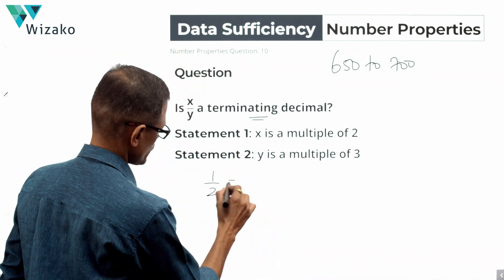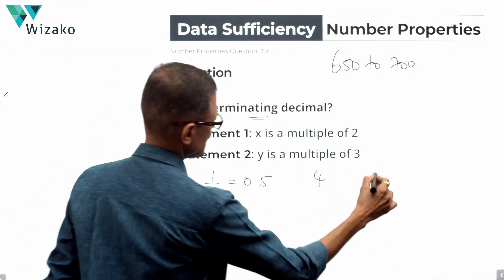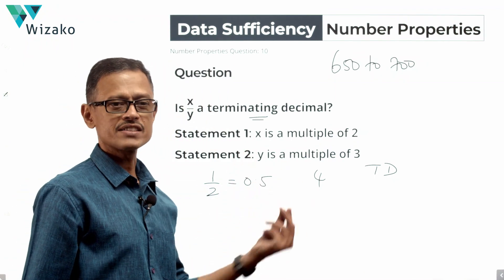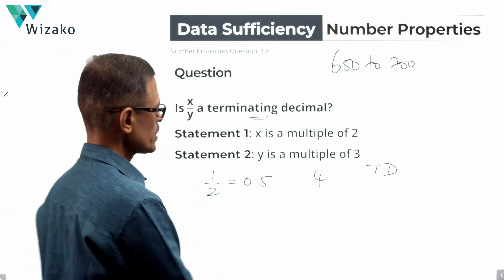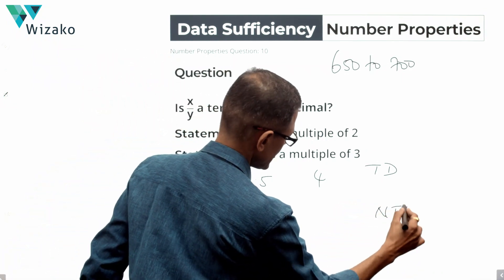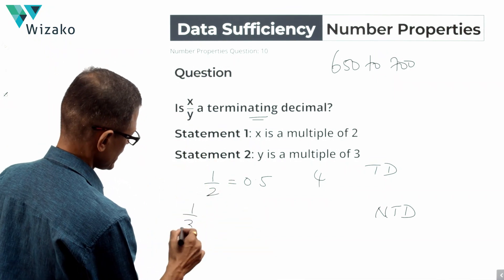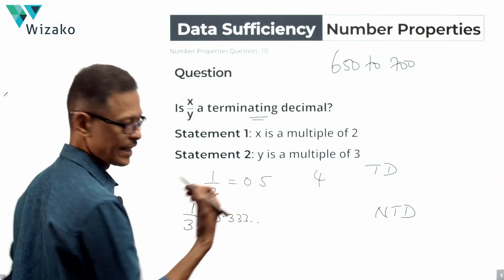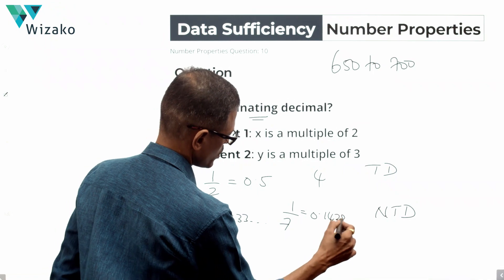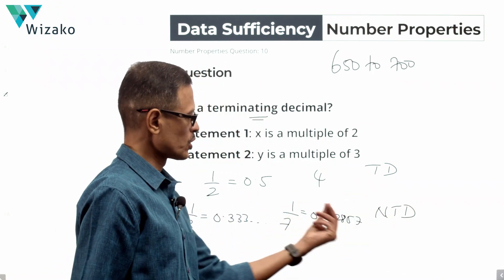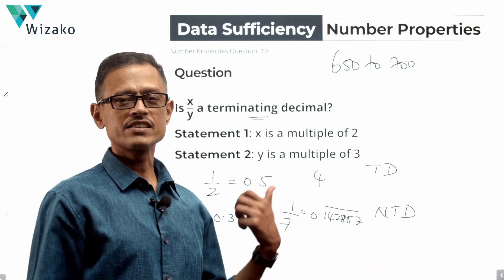Decimals such as 1/2, whose value is 0.5, or something like 4 which is an integer — these are called terminating decimals because they have a finite number of digits after the decimal point. Non-terminating decimals are ones that do not terminate; they go on to infinite digits. Something like 1/3, which equals 0.3333 going on infinitely, or 1/7 which equals 0.142857 — these 6 digits, 142857, keep repeating, so they put a bar on top saying these digits keep repeating.